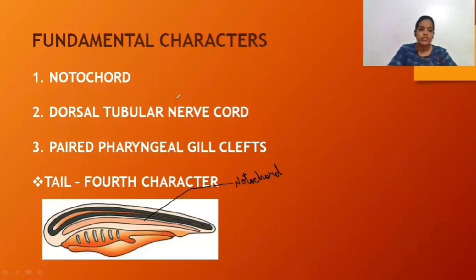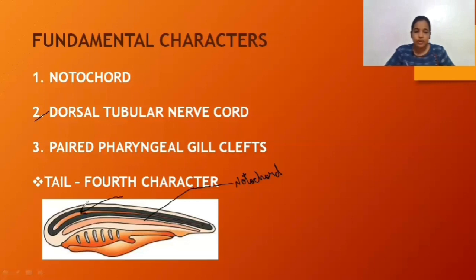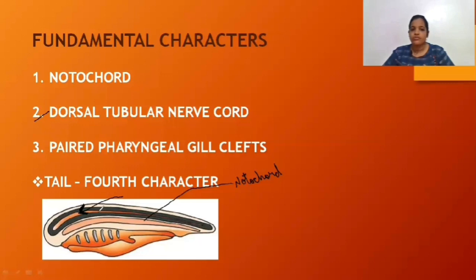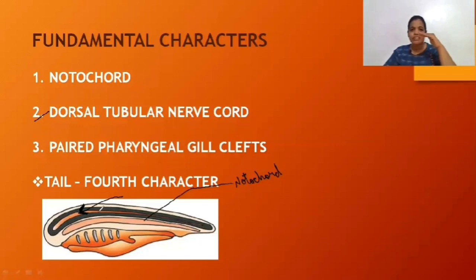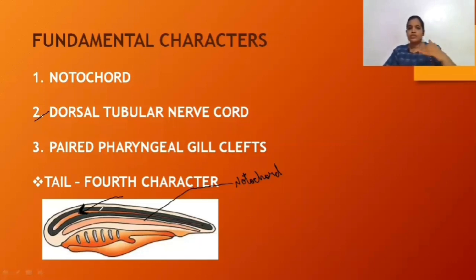The second fundamental character is the Dorsal Tubular Nerve Cord. This Dorsal Tubular Nerve Cord is present between the body wall and the notochord. In case of chordate members, this Dorsal Tubular Nerve Cord is actually a hollow structure — a hollow tubular structure present on the dorsal surface. Starting from the back: first is body wall, then the tubular nerve cord, then the notochord, and below the notochord is the alimentary canal. So we are moving from dorsal towards ventral.